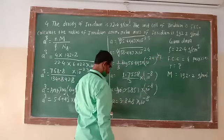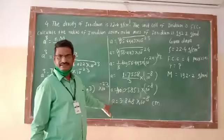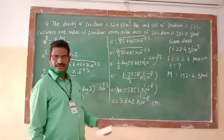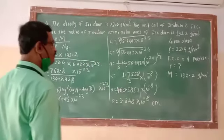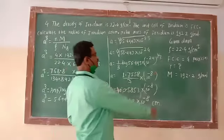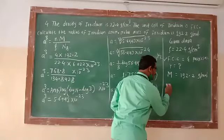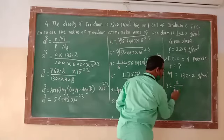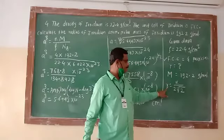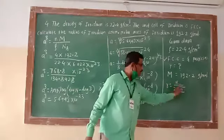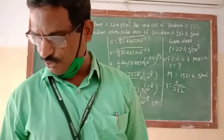After calculating the edge length, we calculate the radius. For FCC structure, the relation between radius and edge length is: R = a / (2√2). This factor 1/(2√2) comes equal to 0.3535.